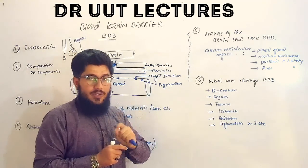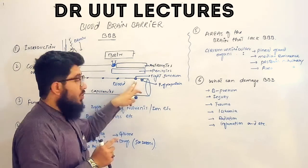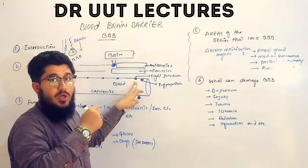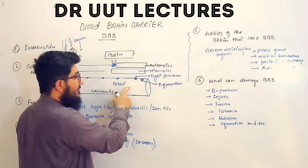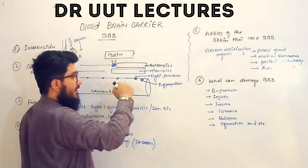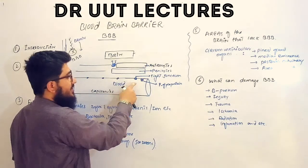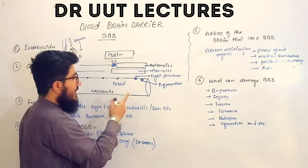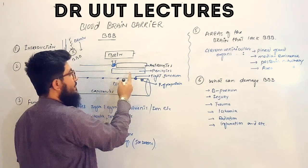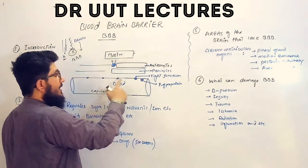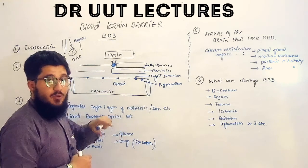The next component is the tight junctions, also known as zona occludens. These are complex protein structures that block the pathway between the endothelium, creating a hindrance — a barrier — preventing substances from moving from the blood towards the brain tissues or cells.